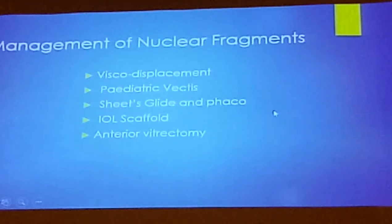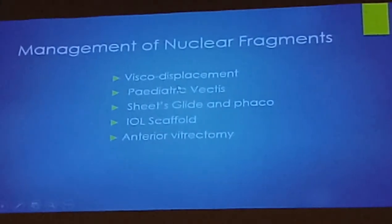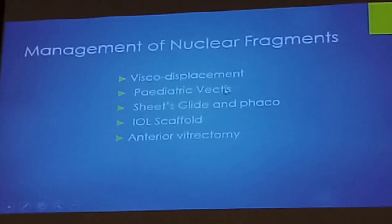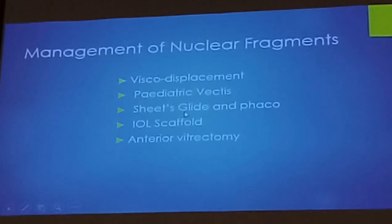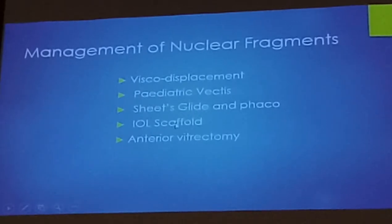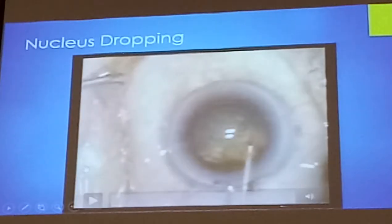It's more difficult when you have a PCR earlier on when you have nuclear fragments. How do we manage these fragments? We can visco-displace it if it's just one or two fragments. We can use a pediatric vectis for a small or moderate-sized fragment. We can use a sheet's glide, which is used for introduction of anterior chamber lenses. Or instead of introducing a sheet's glide, if you're certain about the IOL you're going to use — a three-piece because you're sure the PC is gone — you can insert the three-piece lens to act as a scaffold. You can put this in the anterior chamber, sulcus, or the bag. And if there are small fragments, you can just use an anterior vitrector to do that.